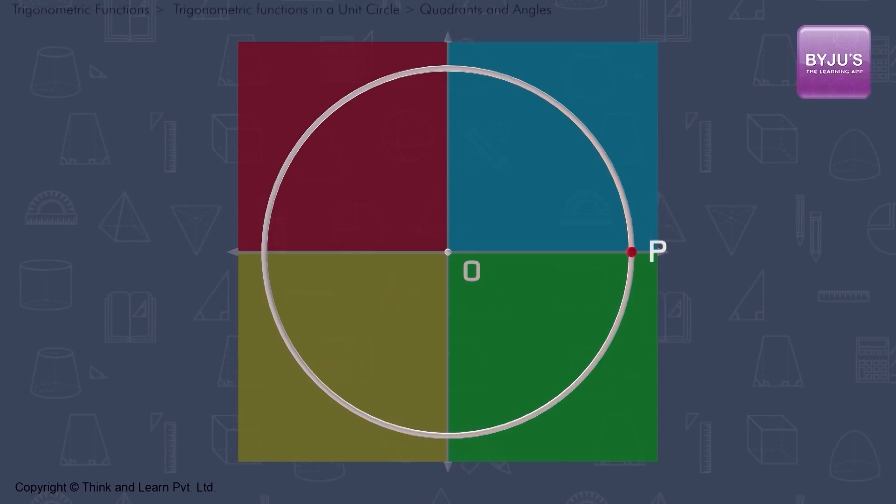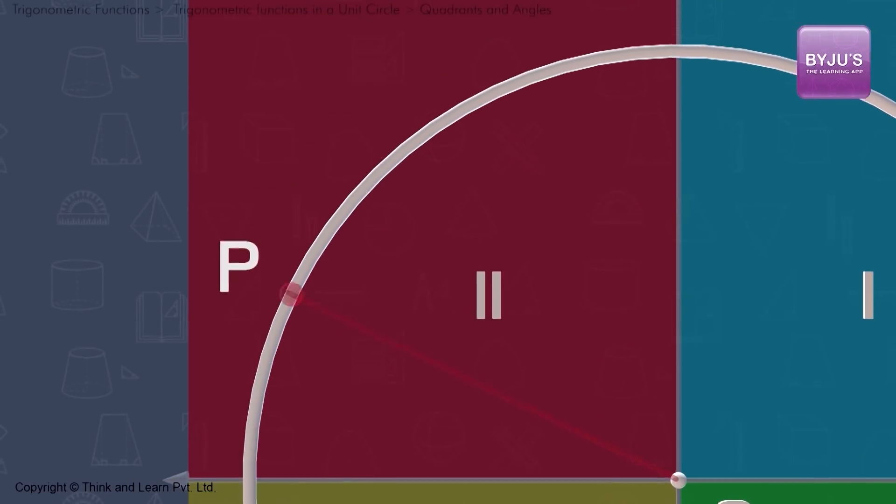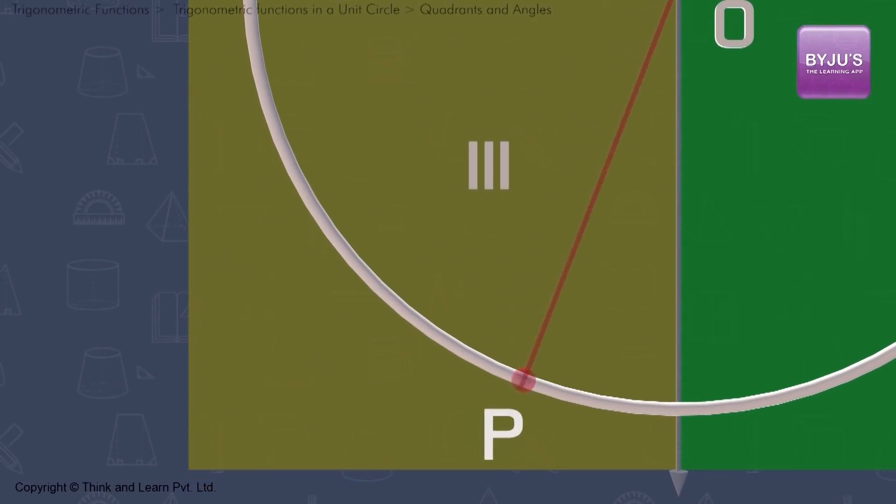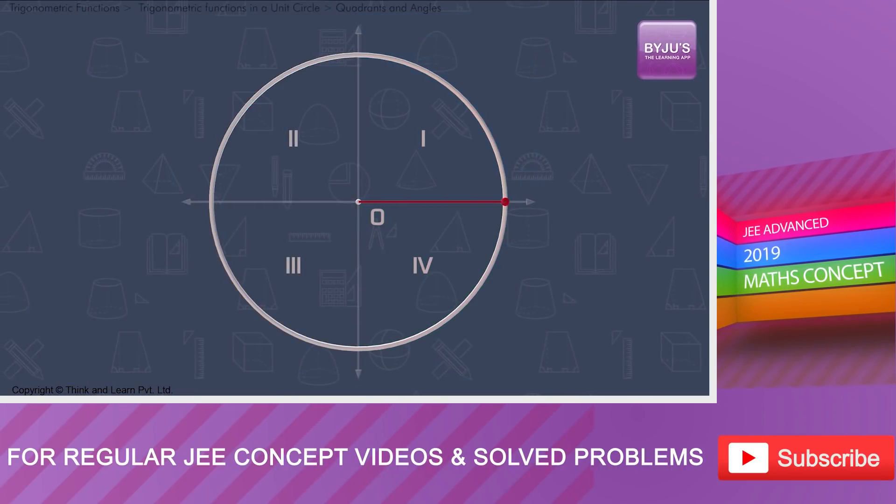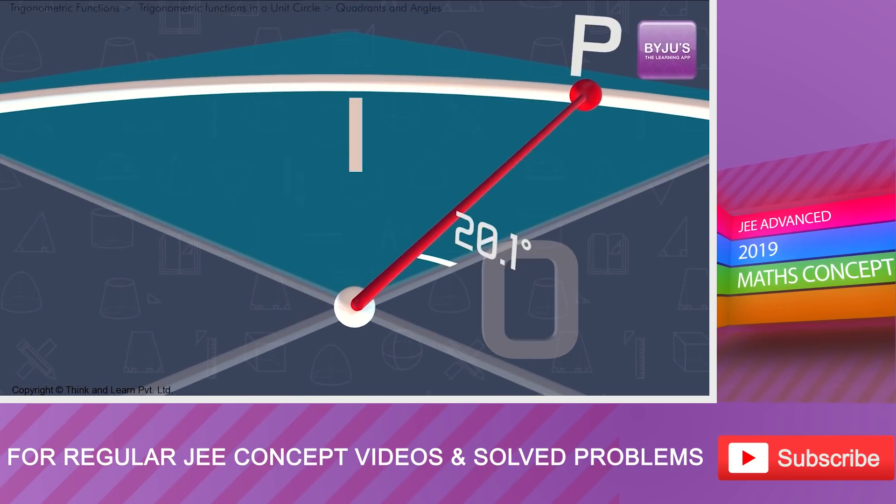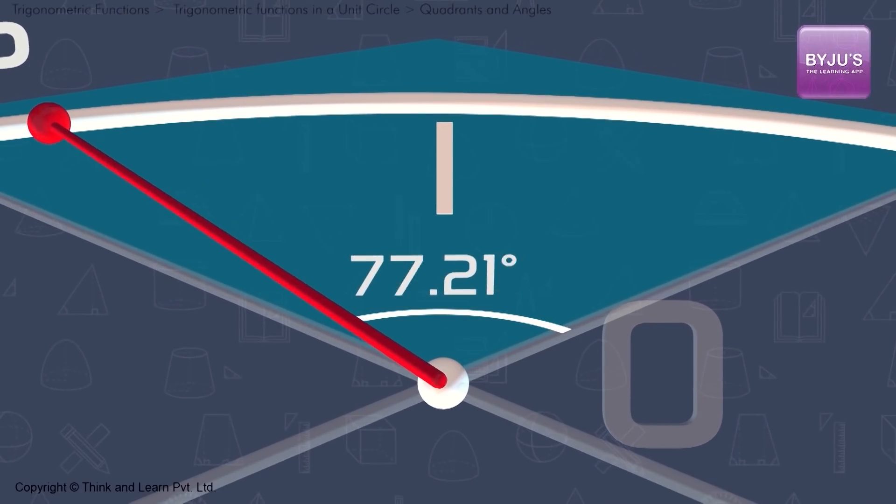The angle begins in its standard position in the first quadrant. As the angle continues in the counter-clockwise direction, we name each succeeding quadrant. As you can see now, when P is in the first quadrant, the angle is acute, that is greater than 0 but less than 90 degrees.